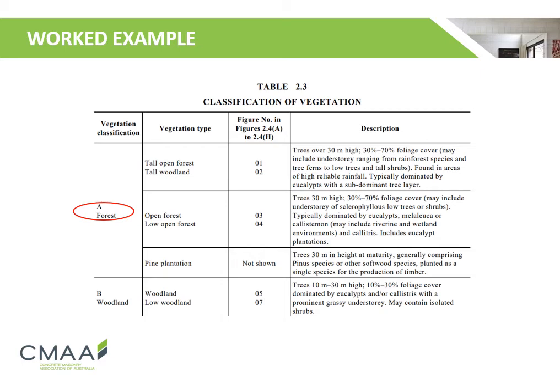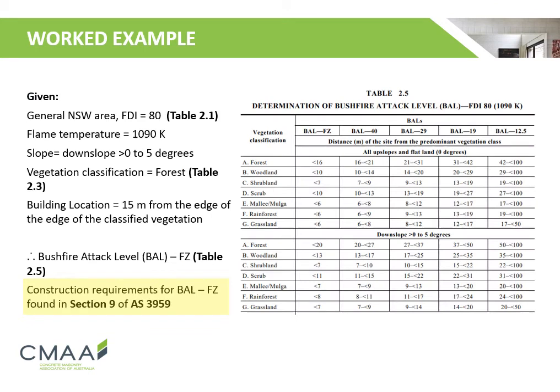Figures 2.4A to H provide a visual representation of the chosen vegetation type. For forests, it may range from tall open to low open. Using the values found from the tables and the given values, we are able to determine the bushfire attack level in Table 2.5. In this case, we find that the bushfire attack level is FZ, or flame zone, which is the highest level of bushfire attack. From here, we are able to determine the construction requirements for a flame zone bushfire attack level, which can be found in Section 9 of AS3959.